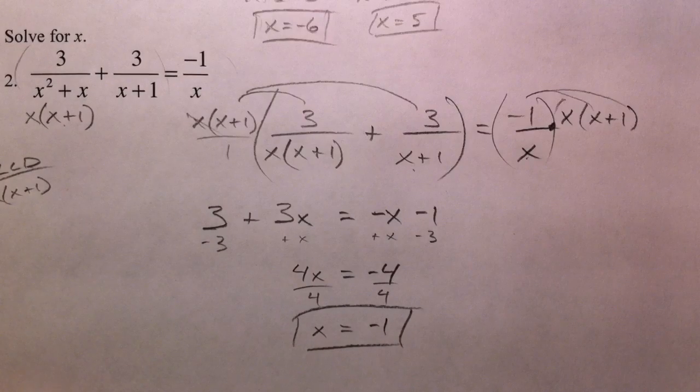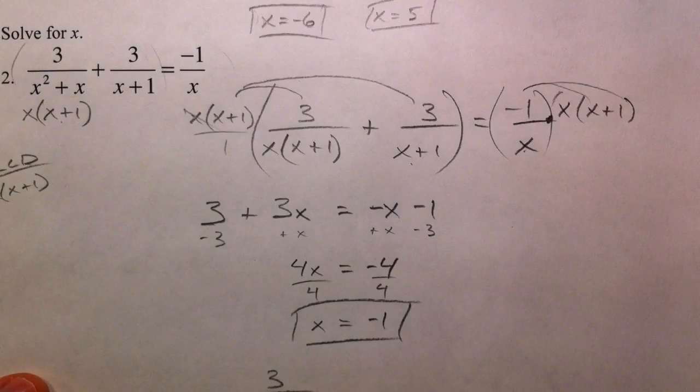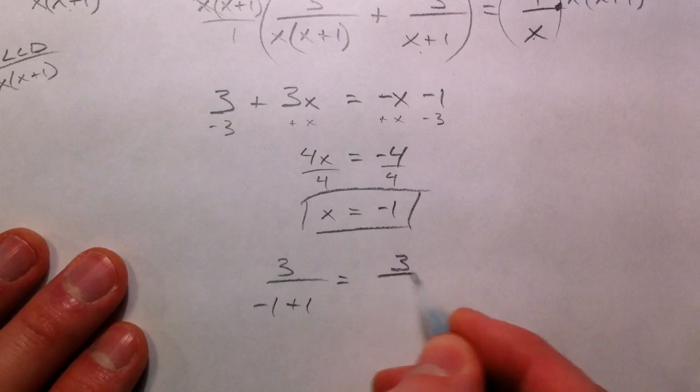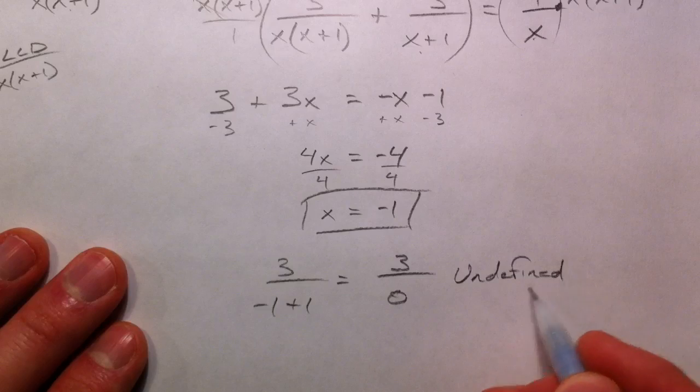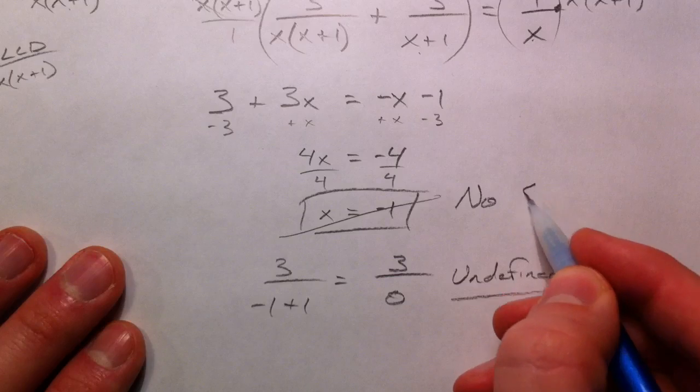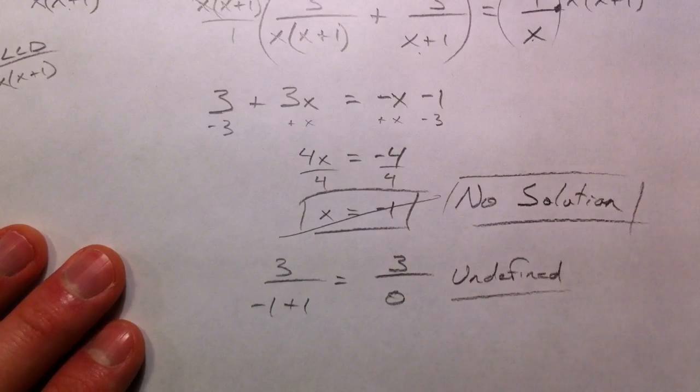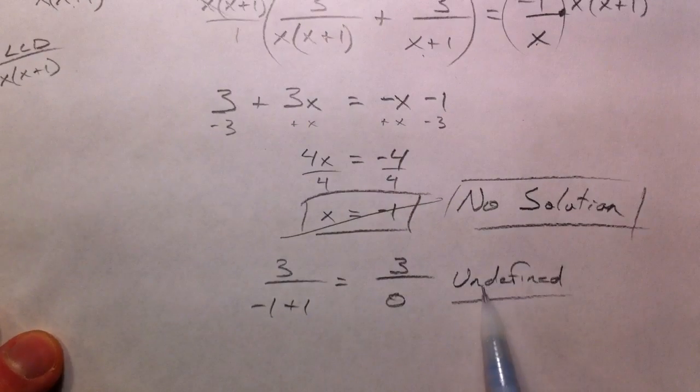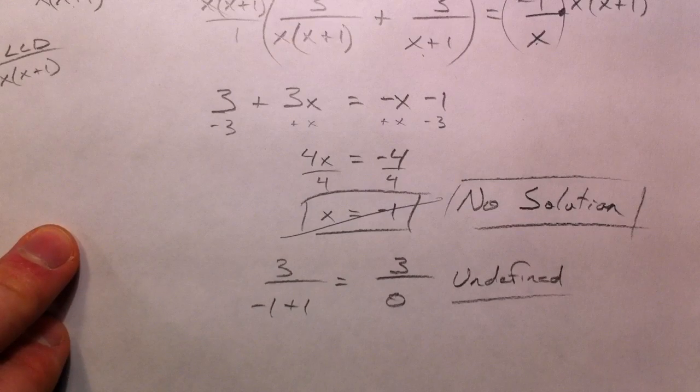Now the only problem with negative 1 is that when you plug it into actually both of these denominators, 3 over negative 1 plus 1, negative 1 is equal to 3 over 0, which is undefined. Because 3 over 0 is undefined, negative 1 can't actually be an answer, so this is no solution. No answer at all to this problem because we got an extraneous solution. And that's that problem. We've got two more examples coming first, which is the starting point, and then when you plug it in.